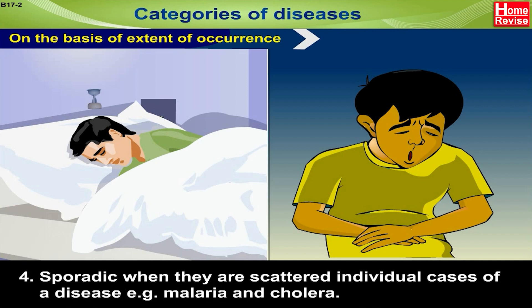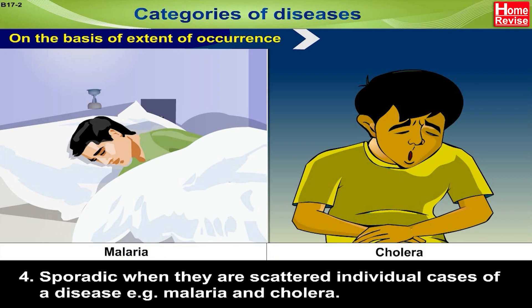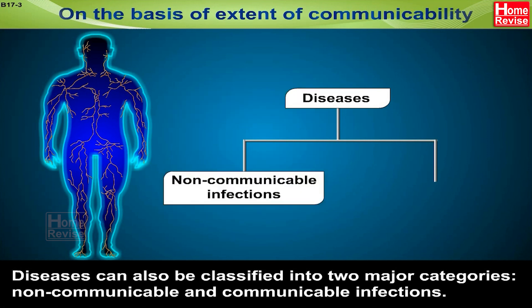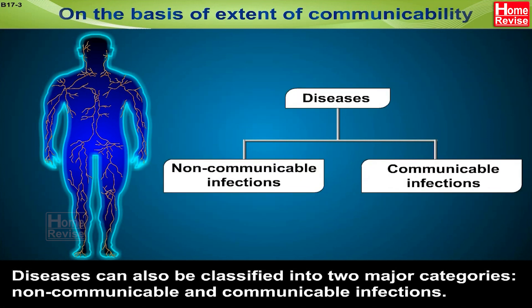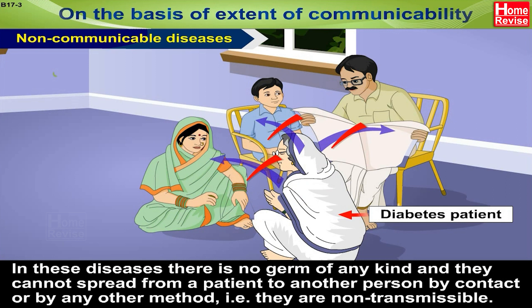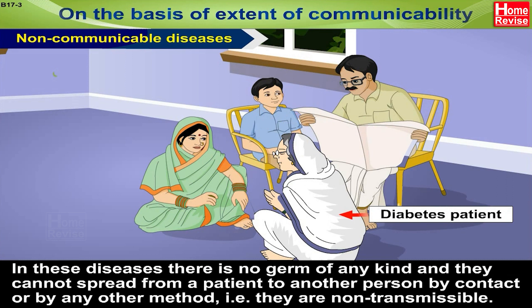Number four: sporadic — when there are scattered individual cases of a disease. For example, malaria and cholera. On the basis of extent of communicability, diseases can also be classified into two major categories: non-communicable and communicable infections. Non-communicable diseases: in these diseases there is no germ of any kind; they cannot spread from a patient to another person by contact or by any other method. That is, they are non-transmissible.